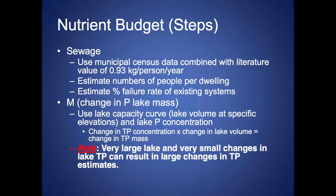For sewage, you can use municipal census data for residents living around the watershed of the lake, combined with a literature value — here in Alberta we use about 0.93 kilograms per person per year. You estimate the number of people per dwelling and the percent failure rate of existing systems. We estimate about a 10% failure rate for individual systems around lakes. We've done caffeine studies in lakes where we've detected caffeine coming in from faulty septic systems, which confirms a certain percentage failure rate.